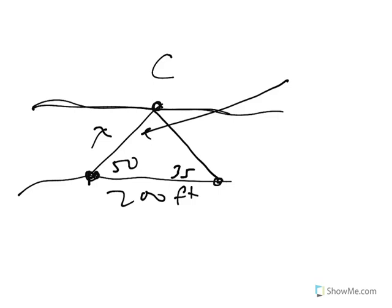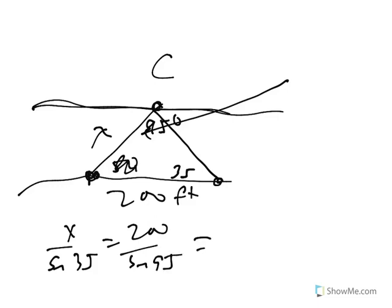I can work out this angle over here is 95 degrees because they have to add up to 180. Then I can disregard the 50. It's not across from anything. Then I can work out x over sine 35 equals 200 over sine 95 to get 115.15.